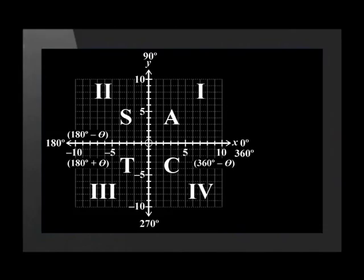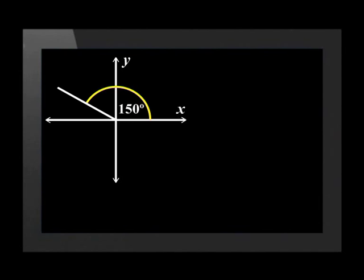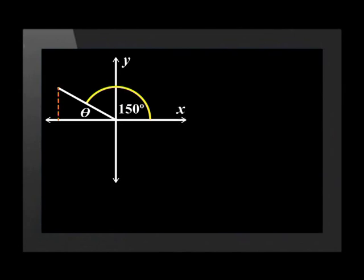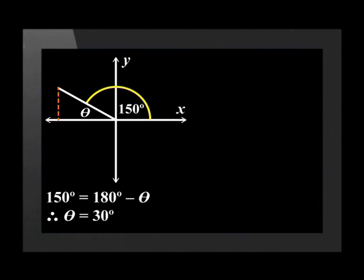To calculate the acute angle of a terminal arm that falls in the second quadrant, we let the angle we want to reduce equal 180 degrees minus theta, and solve for theta. Let's do an example: the angle between this terminal arm and the x-axis is 150 degrees. We construct the triangle by drawing the line to the x-axis. Theta is the acute angle between the x-axis and the terminal arm. Setting 150 degrees equal to 180 degrees minus theta, we get theta equals 30 degrees.